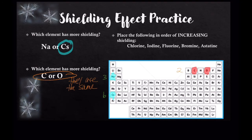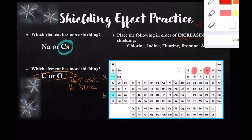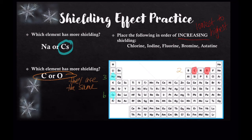Now let's place these elements in order of increasing shielding — starting with the lowest shielding effect and going to the highest. The elements are chlorine, iodine, fluorine, bromine, and astatine. Hopefully you notice that these are all halogens. I'll highlight them on the periodic table and determine which one has the lowest shielding.